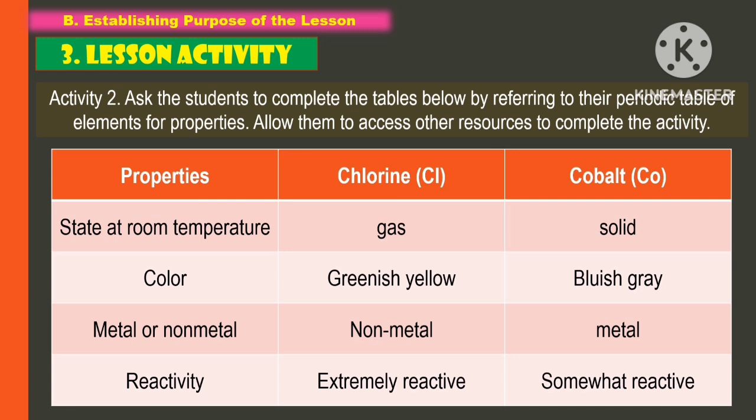Another comparison is between chlorine and cobalt. When it comes to state at room temperature, chlorine is a gas while cobalt is solid. For color, chlorine is greenish-yellow while cobalt is bluish-gray. When it comes to metal or non-metal, chlorine is a non-metal whereas cobalt is a metal. For reactivity, chlorine is extremely reactive while cobalt is only somewhat reactive.